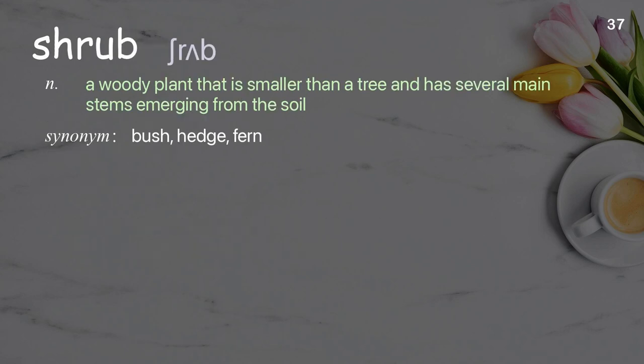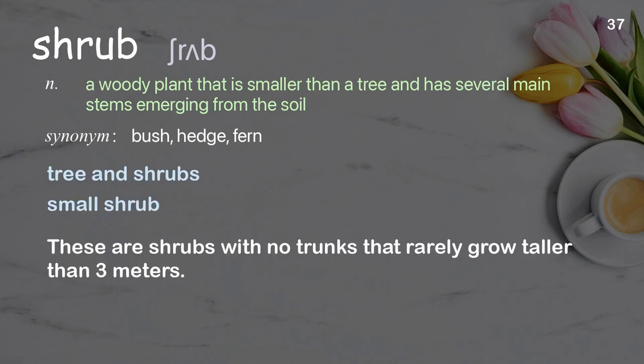Shrub: a woody plant that is smaller than a tree and has several main stems emerging from the soil. Examples: trees and shrubs, small shrub. These are shrubs with no trunks that rarely grow taller than three meters.